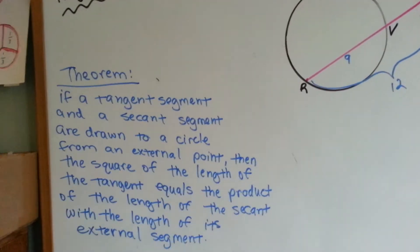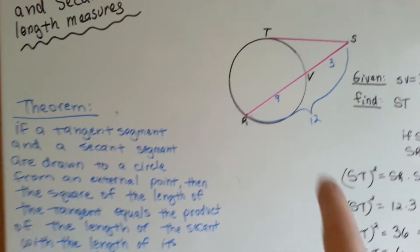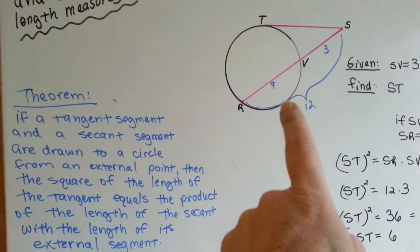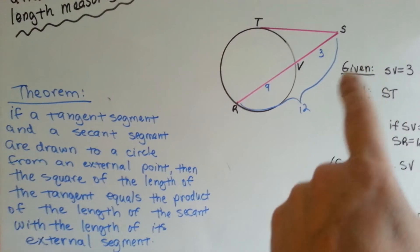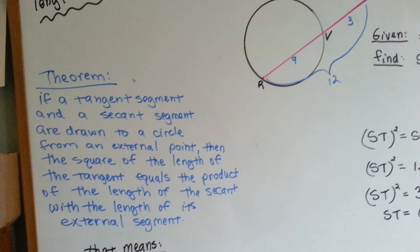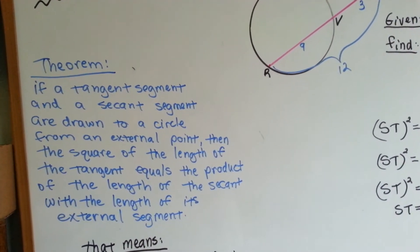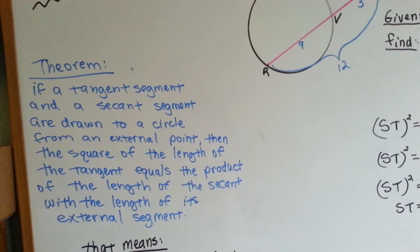So look at our theorem. If a tangent segment and a secant segment are drawn to a circle from an external point, then the square of the length of the tangent equals the product of the length of the secant with the length of its external segment.